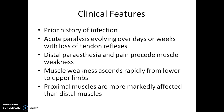The clinical features include a prior history of infection, most commonly gastrointestinal or respiratory infection. There will be acute paralysis evolving over days or weeks very quickly. There will be loss of tendon reflexes, and distal paresthesia and pain precede muscle weakness — meaning there will be pain and paresthesia before the muscles begin to get weakened.